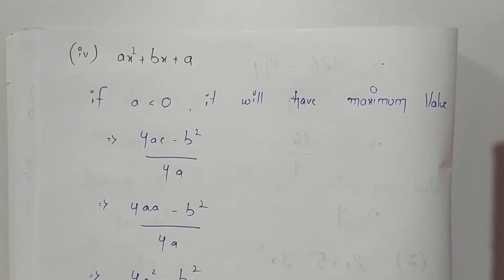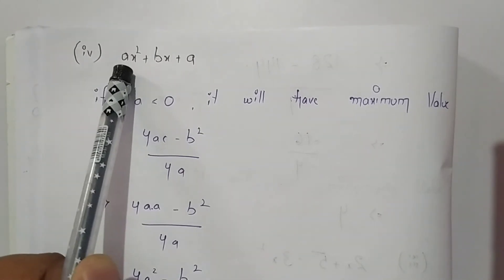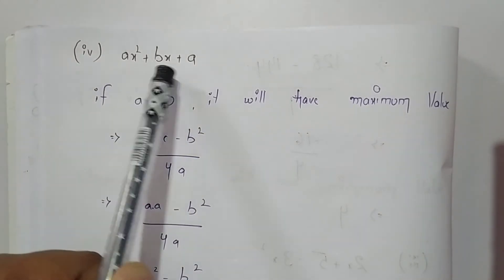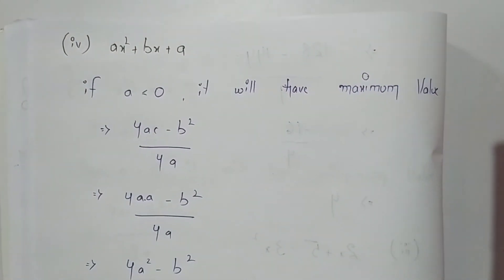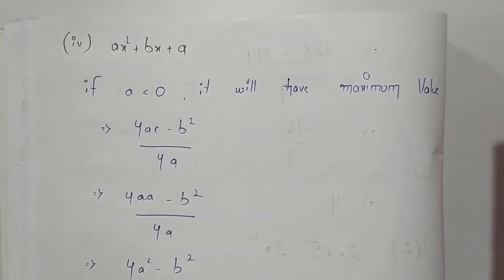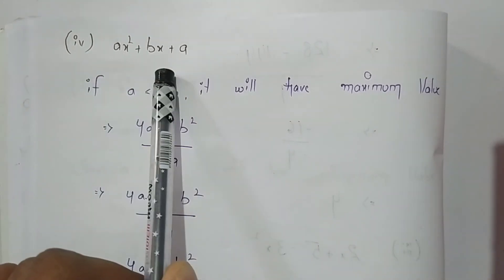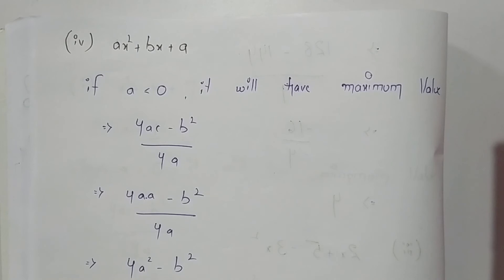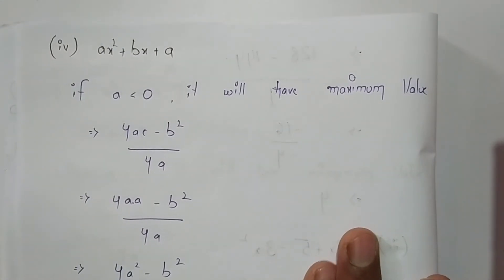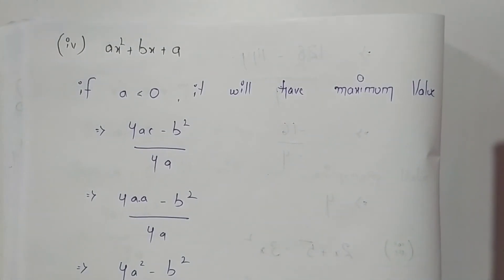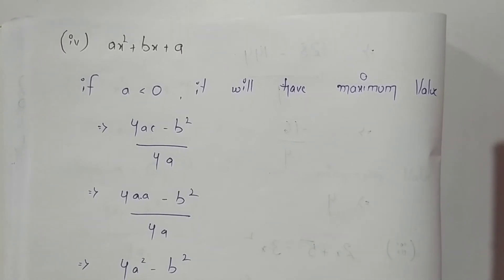Now the fourth expression is ax² + bx + a. There is no numeric value given for a. In this expression, in the place of a there is a, in the place of b there is b, and in the place of c there is also a. We will consider two cases: if the value of a is less than 0, and if the value of a is greater than 0.